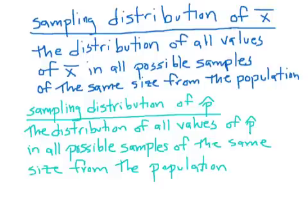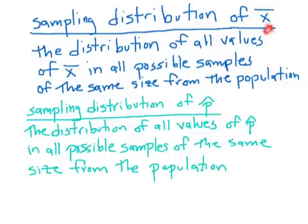Chapter 9 is all about something called sampling distributions. When we talk about sampling distributions, we talk about the sampling distribution of a particular statistic. This is like the post-it note activity we did on the back of the room. The sampling distribution basically means you take many, many samples from a population — what can we say about the distribution of all those samples?